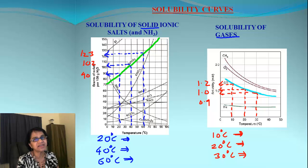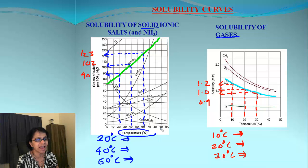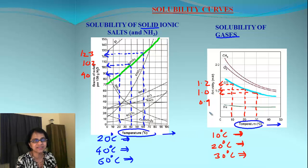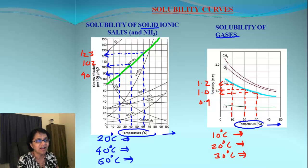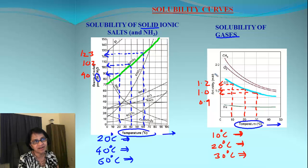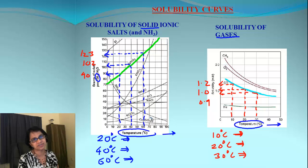What is common between them is the x and y axes. Along the x-axis, they both have increasing temperature. Along the y-axis, we have the amount of solute dissolved in 100 grams of water — so this is always grams of solute per 100 grams of solvent.